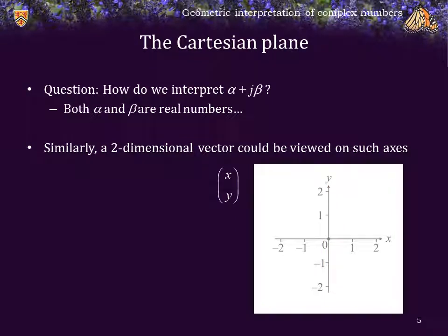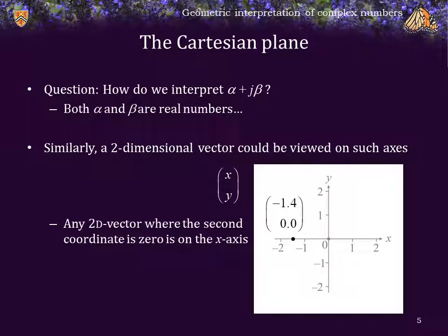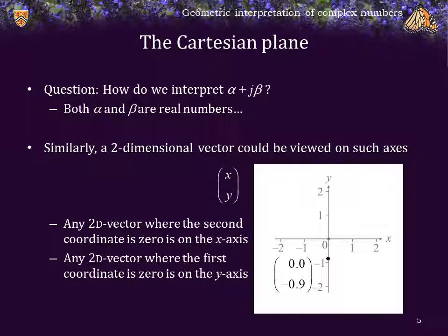Similarly, a two-dimensional vector could be viewed on such a plane. So, given the two-dimensional vector x, y, we could plot that point on the plane where the first coordinate tells us how far to the right, if it's positive, left if negative, and the second coordinate tells us how far above or below the x-axis we are. Here's another point, 0.3 to the right, and negative 0.7 or 0.7 down. Any vector where the second coordinate is 0 is said to be on the x-axis, and any vector where the first coordinate is 0 is said to lie on the y-axis.